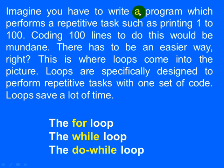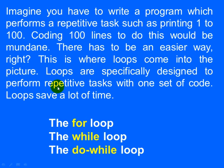Imagine you have to write a program which performs a repetitive task such as printing 1 to 100. Coding 100 lines to do this would be mundane — there has to be an easier way. This is where loops come into picture. Loops are specifically designed to perform repetitive tasks — tasks which need to be performed again and again with one set of code. Loops save a lot of time. In Java we have the for loop, the while loop, and the do-while loop. We shall start with the for loop.